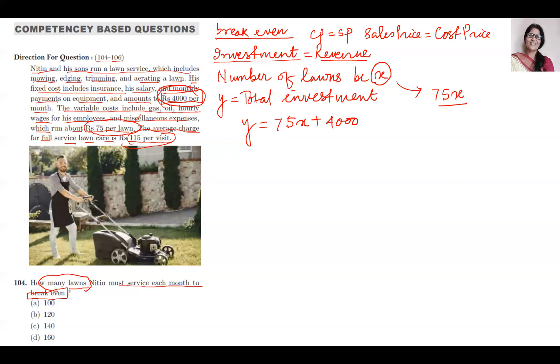And how much is he receiving? 115 per visit. That means y equals 115x. From 1 lawn, 115 rupees; from x lawns, 115x. So this is equation 1, this is equation 2. Now you have to solve it to get the value of x. I can make them equal: 115x equals 75x plus 4,000.